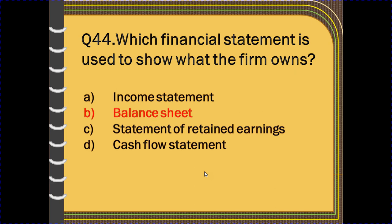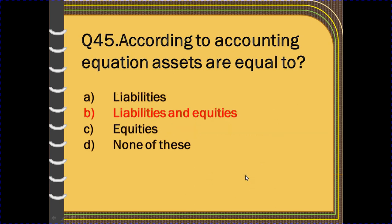The balance sheet shows what the firm owns. According to the accounting equation, assets are equal to liabilities and equities. The correct answer is liabilities and equities — assets equal liabilities plus equity.